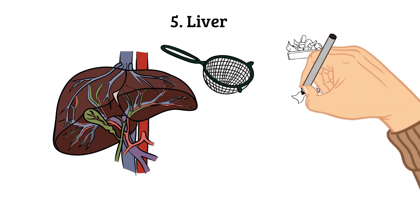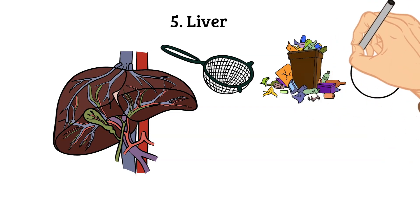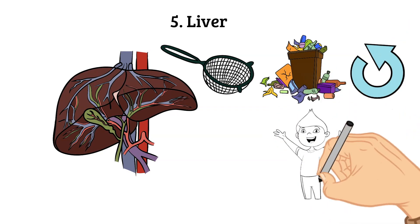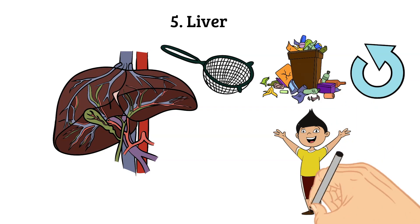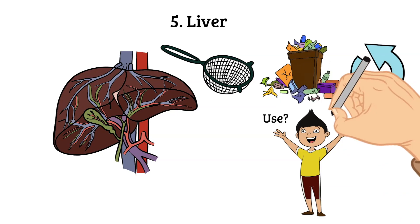The liver filters out any harmful substances or wastes, turning some of the waste into more bile. The liver even helps figure out how many nutrients need to go to the body and how many will stay behind in storage.